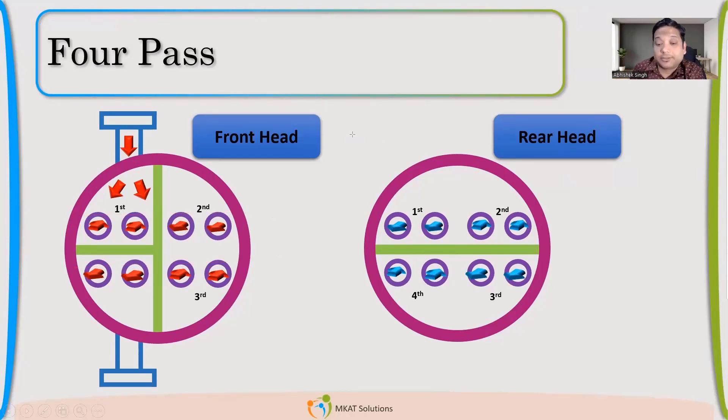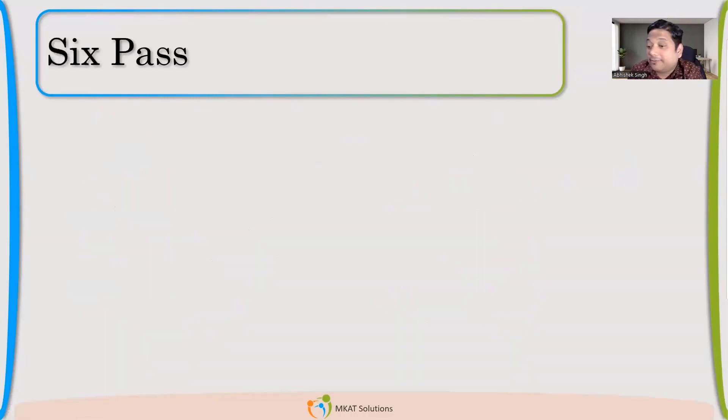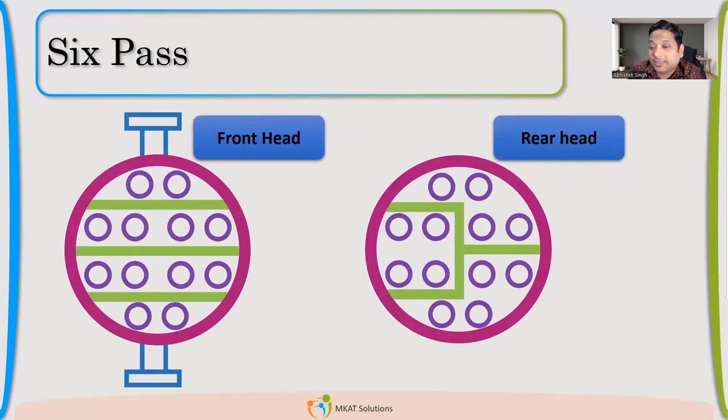What if we have six pass? How will we do the partition arrangements? So this is one, there can be other possible arrangement also.